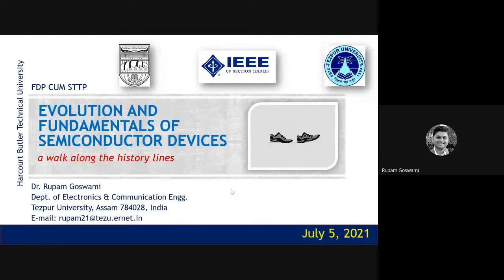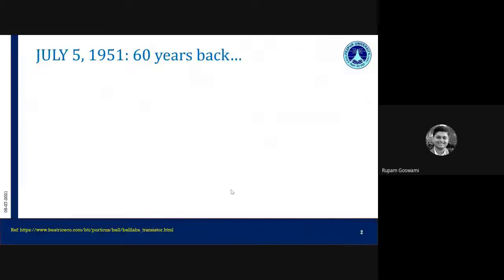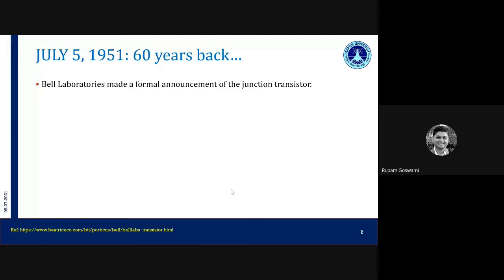Since we are talking about history, today is the 5th of July 2021, and this also coincides with one of the most important developments in the history of semiconductor devices. In 1951, around 60 years back from this date, on this same day, Bell Laboratories made a formal announcement of the junction transistor — the BJT which we very popularly know today.